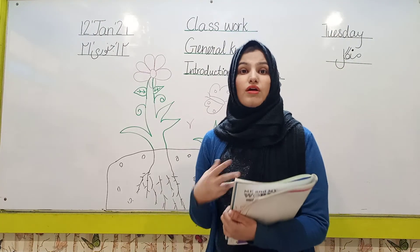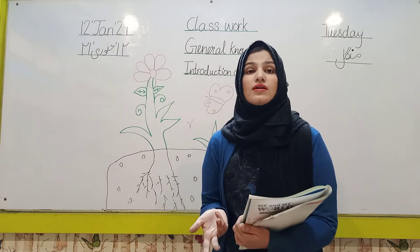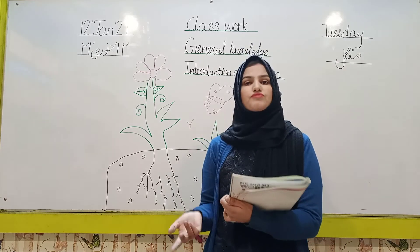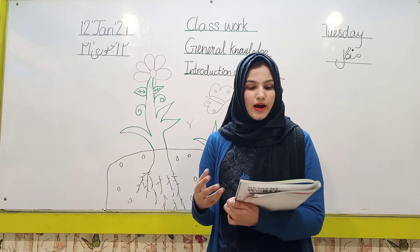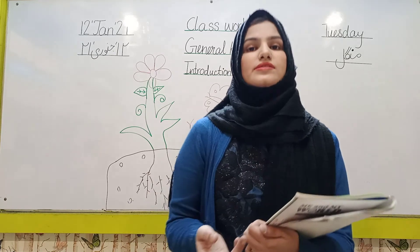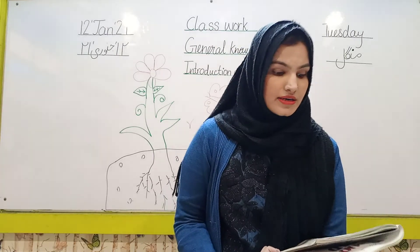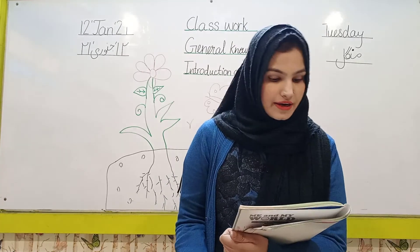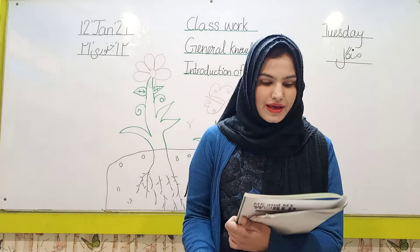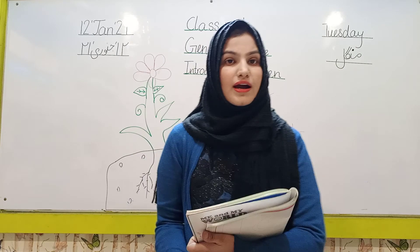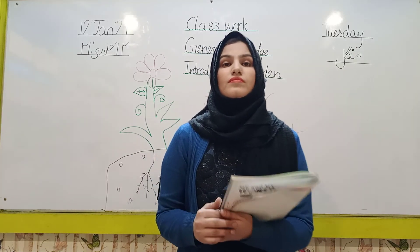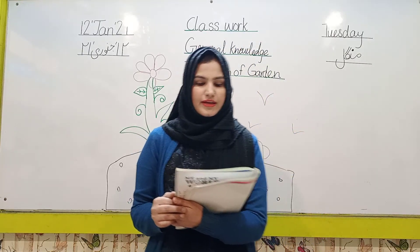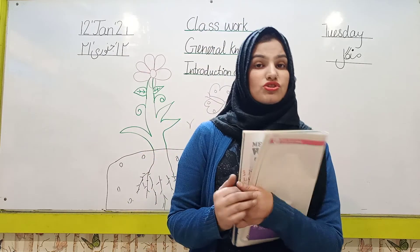Today I will tell you about the meaning of garden. A garden is a beautiful place. There are plants, flowers, and grass in the garden. There are butterflies, bees, and ladybirds in the garden. What is the color of the ladybird? Red — red and black. We thank Allah that He created so many beautiful things for us to enjoy.